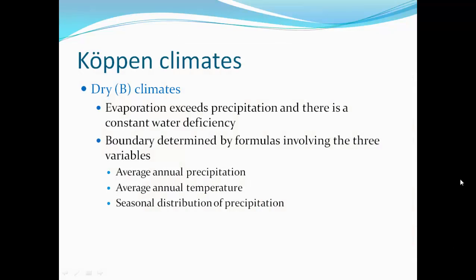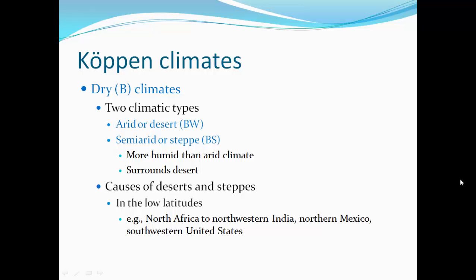The dry B climates: evaporation of water exceeds precipitation, creating a constant water deficiency. Boundaries are determined by formulas involving three variables: average annual precipitation, average annual temperature, and seasonal distribution of precipitation. Two major B climates: arid or desert climates (BW) and semi-arid or steppe climates (BS). The steppe climate is more humid than the arid climate and surrounds the desert as a fringe zone.